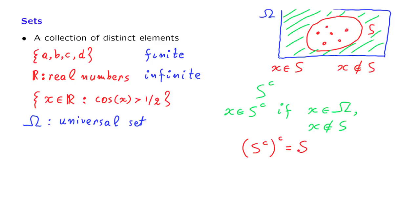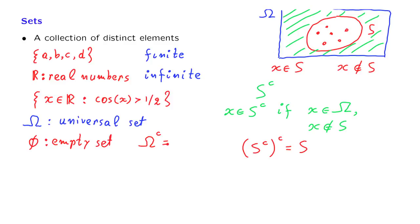Another set of particular interest is the so-called empty set. The empty set is a set that contains no elements. In particular, if we take the complement of the universal set — since the universal set contains everything, there is nothing in its complement — so its complement is going to be the empty set.